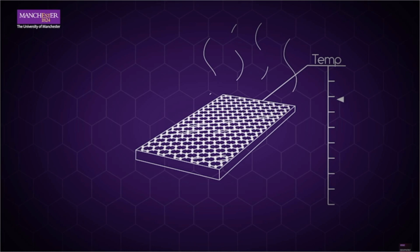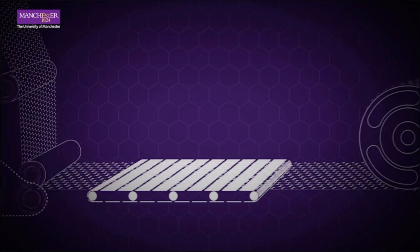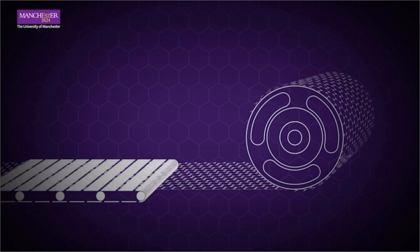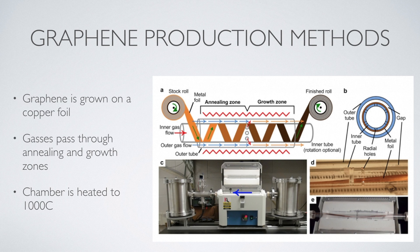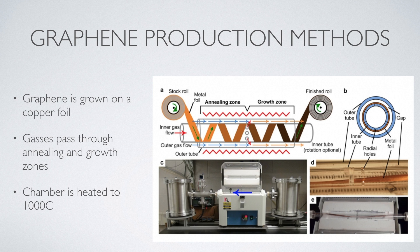A new process developed at MIT plans to enable continuous production, which could significantly scale up graphene production, making it feasible to produce graphene for water filtration at commercial and industrial scales. This process is an adaptation of a chemical vapor deposition method where graphene is essentially grown on a copper foil. Instead of a traditional small vacuum chamber, the new chamber consists of two concentric tubes with a thin ribbon of copper sitting over the inner tube. Gases flow sequentially through an annealing zone — which prepares the copper surface — and then a growth zone where graphene is actually formed. The chamber is heated to approximately 1000°C. For water filtration, oxygen plasma etching can then be used to create nanopores that allow water molecules to pass but prevent ions from flowing.